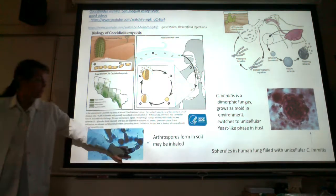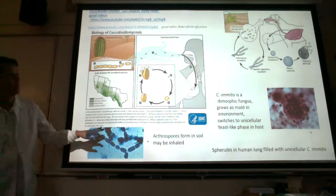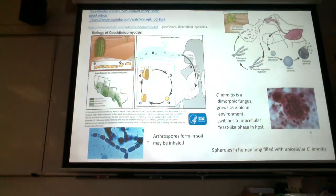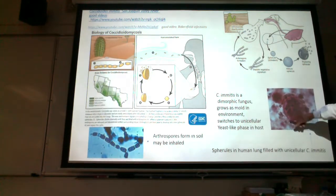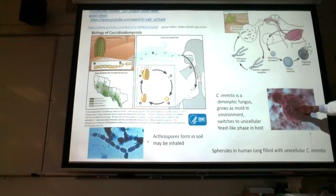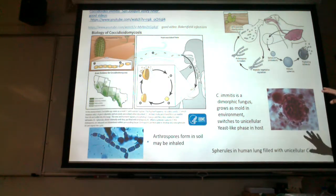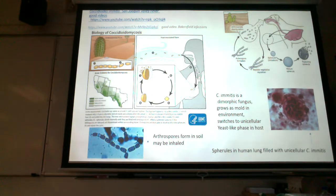Here are the arthrospores formed in the soil that become aerosolized when inhaled. Within the lungs, Coccidioides forms little sac-like structures called spherules containing unicellular yeast-like structures. Historically they've been called endospores, but we'll call them the unicellular yeast-like form to avoid confusion with bacterial endospores from Bacillus anthracis or the clostridia.